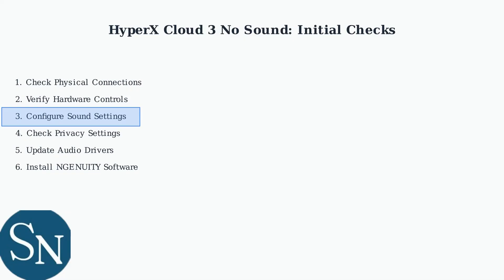Check your privacy settings to ensure applications have permission to access your microphone. Go to Settings, then Privacy, then Microphone, and verify that microphone access is enabled for your device and applications.